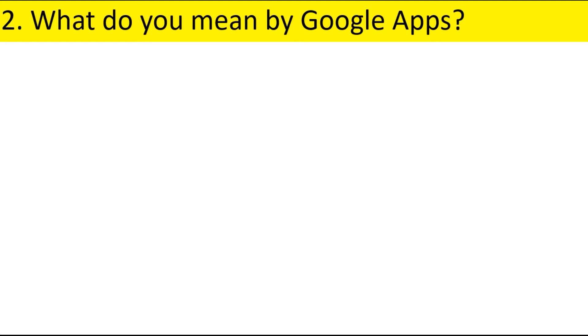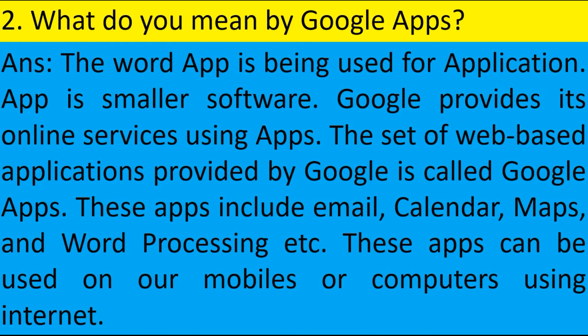Second, what do you mean by Google Apps? The word app is used for application. An app is smaller software. Google provides its online services using apps. The set of web-based applications provided by Google is called Google Apps. These apps include email, calendar, maps, and word processing, etc. These apps can be used on our mobile or computer using the internet.